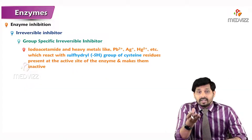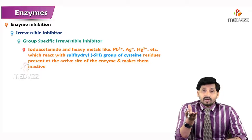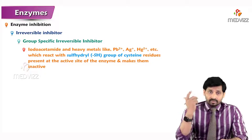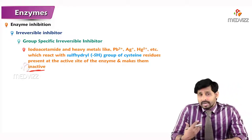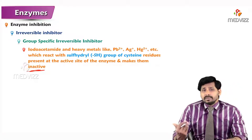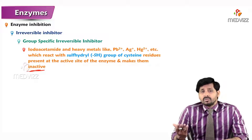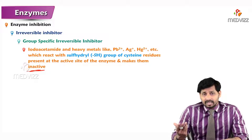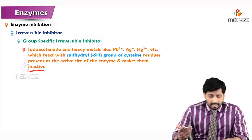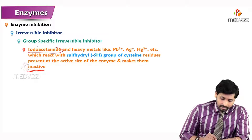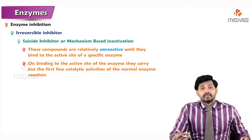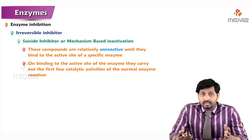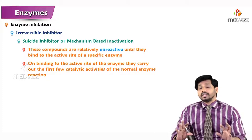Another example of group specific inhibitors is iodoacetamide and heavy metals like lead, silver, and mercury. These react with the sulfhydryl groups of cysteine residues present in the active site of the enzyme, making them inactive. Iodoacetamide is also known as an inhibitor of enzymes present in the Krebs cycle.